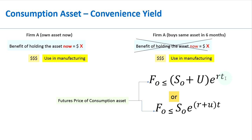If the storage cost is given as a percentage — as a yield — then you can use the formula on the right-hand side. What we are saying is that the futures price of a consumption asset is less than or equal to this price.